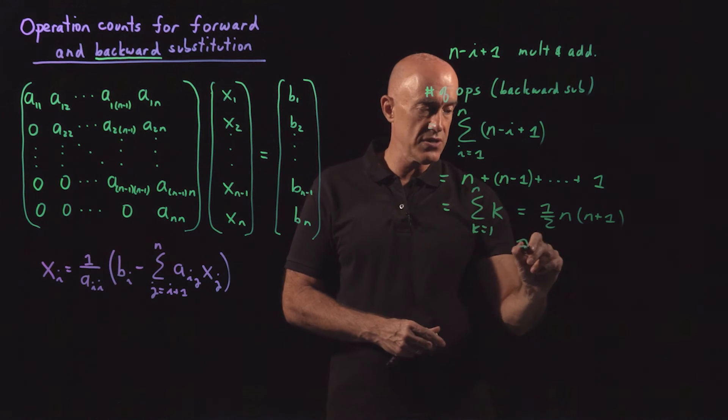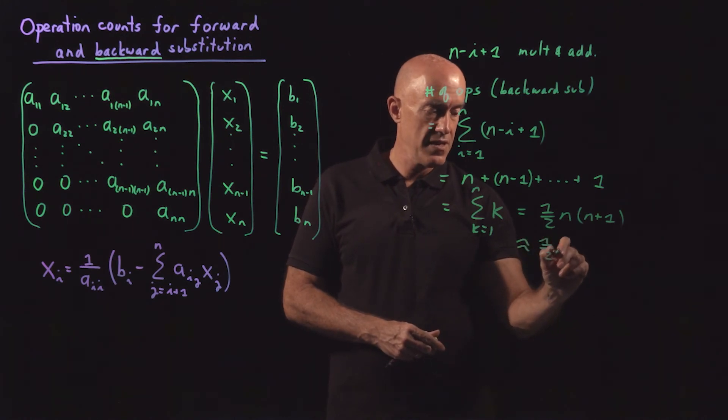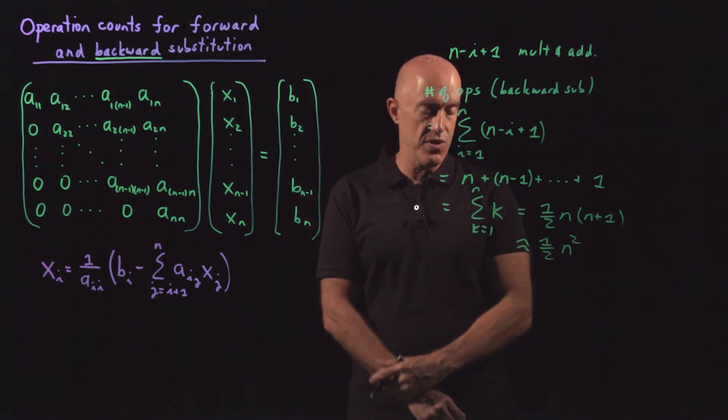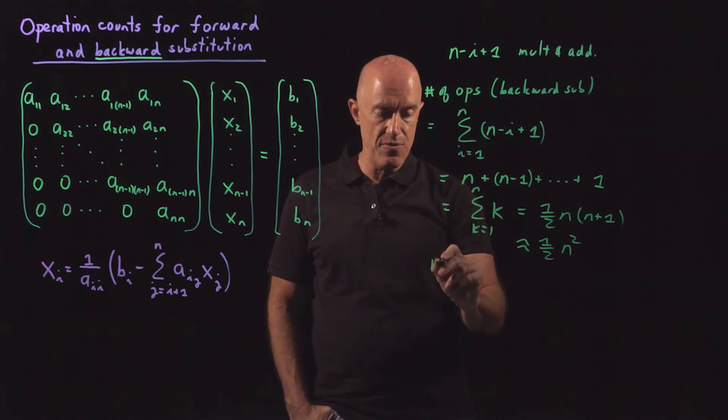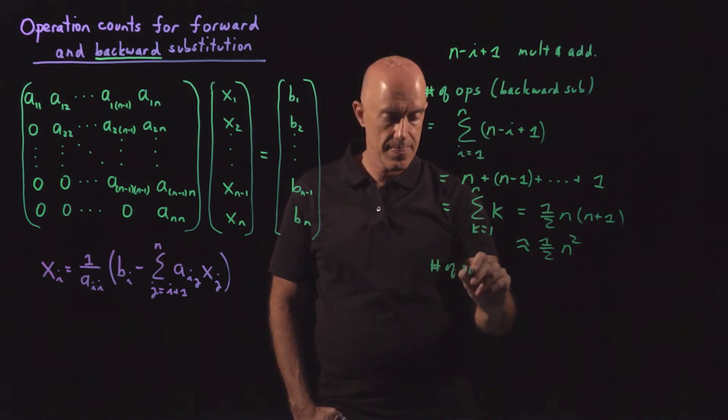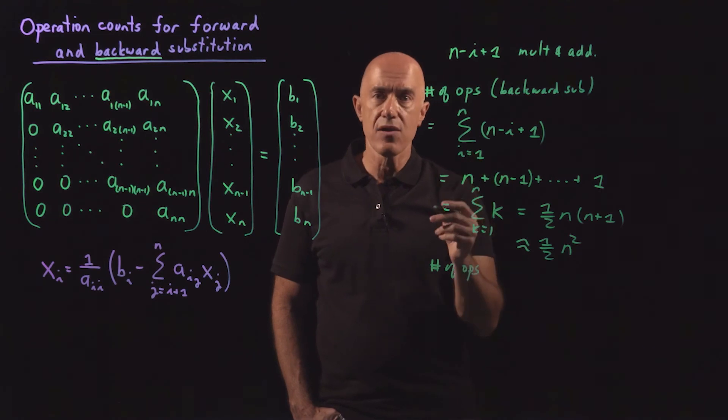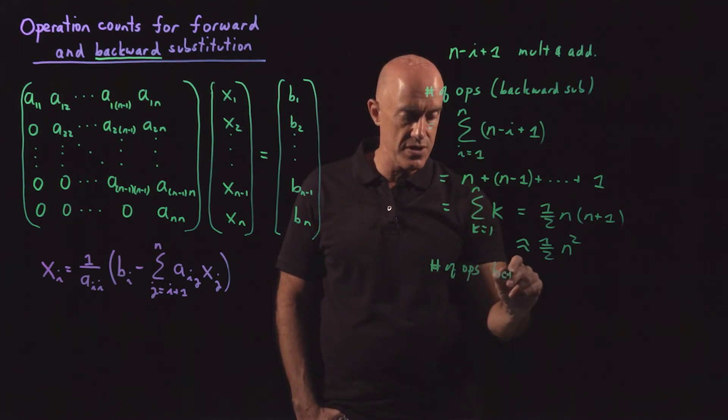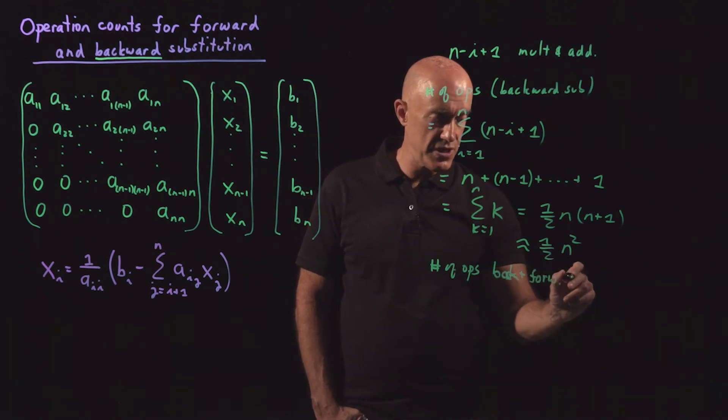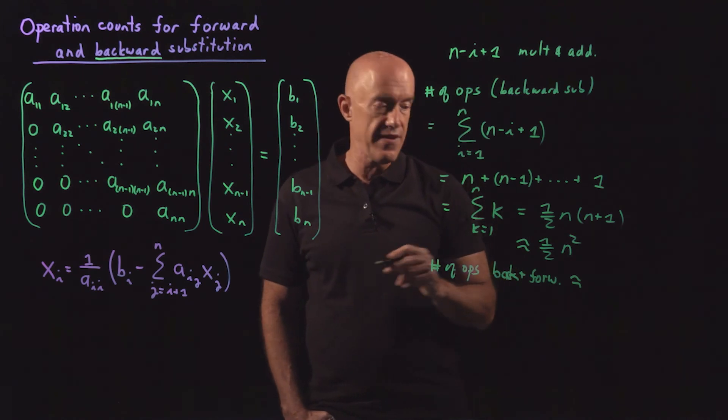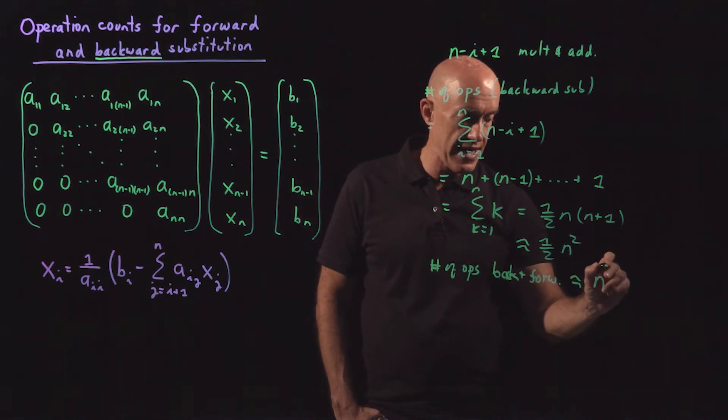Okay? So this goes like 1/2 n squared. So that's the leading order term here, 1/2 n squared. So if we did both backward and the number of operations for both backward and forward substitution, it would go like twice 1/2 n squared. So it would go like n squared.